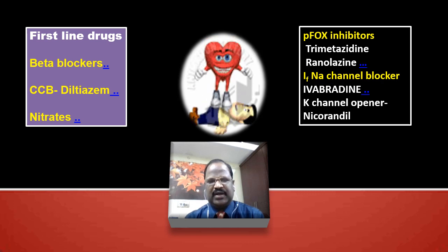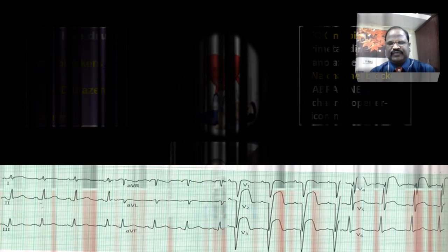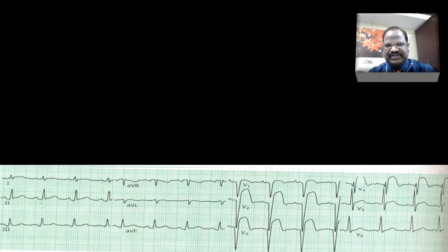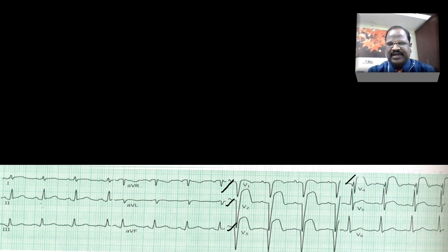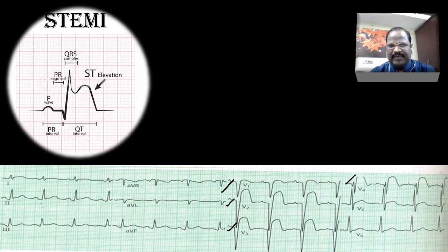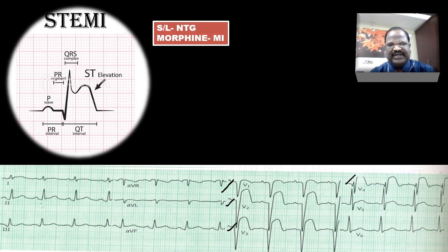Now, outlining the pharmacotherapy of myocardial infarction. In this ECG, there is ST segment elevation seen on V1, V2, V3, and V4 leads — it is a case of ST elevation MI. To manage ST elevation MI, there will be severe chest pain. To control the chest pain, first we give sublingual nitroglycerin — that is a fantastic choice.